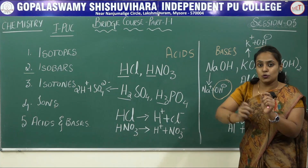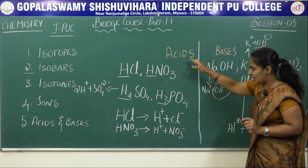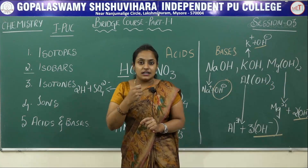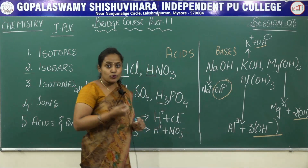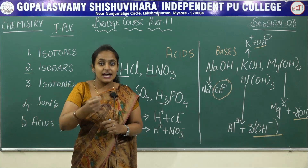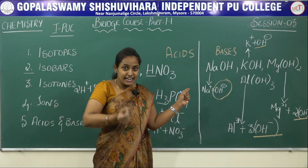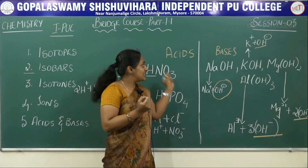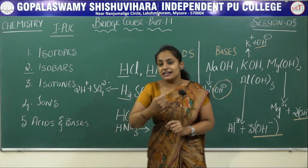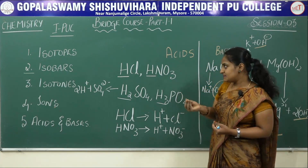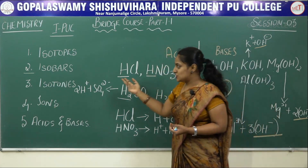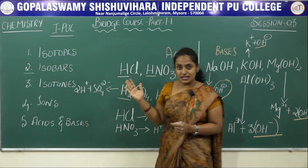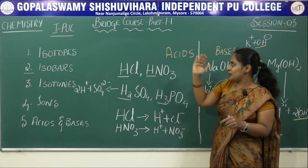This is the chemical definition used for acids and bases: acids are species containing H+ ions and bases are species containing OH− ions. In your PU section you will study in detail the different definitions of acids and bases discovered by different scientists, in the equilibrium chapter. This session covered the fundamental concepts of isotopes, isobars, isotones, ions, acids and bases — bridging your lower classes and your PU sections. Thank you.